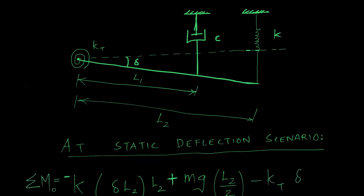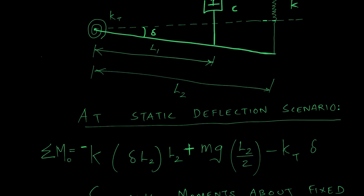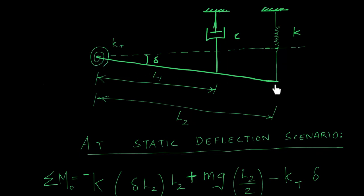At static equilibrium, the net moment must equal zero. The damper won't cause any force because there is no velocity — it's just static. The spring will exert a force on the bar: Delta times L2 gives the deflection at the spring, and deflection times stiffness gives the spring force. The spring force times the length L2 gives the moment.